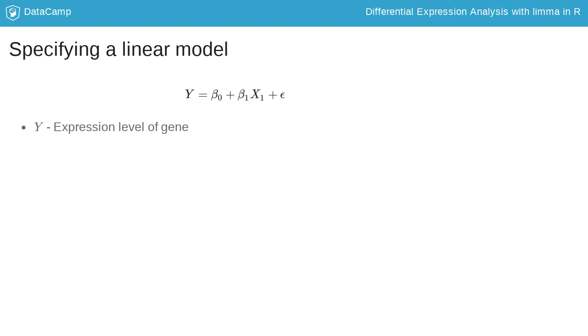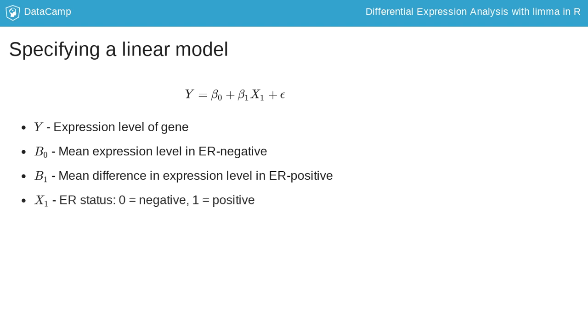The response variable Y is the expression level of the given gene. Beta naught is the mean expression level of the gene in the ER negative tumors. Beta1 is the mean difference in expression level of the gene in the ER positive tumors compared to the ER negative tumors. Explanatory variable X1 indicates ER status, and epsilon models the random noise.